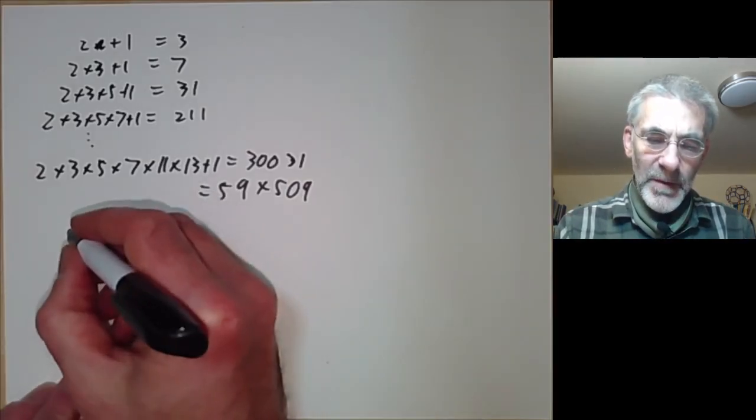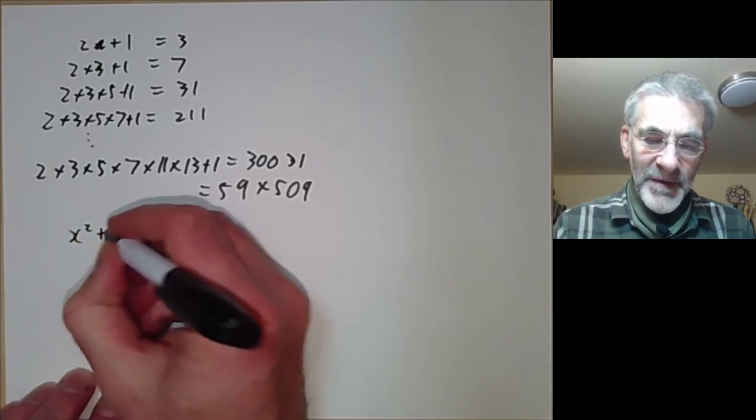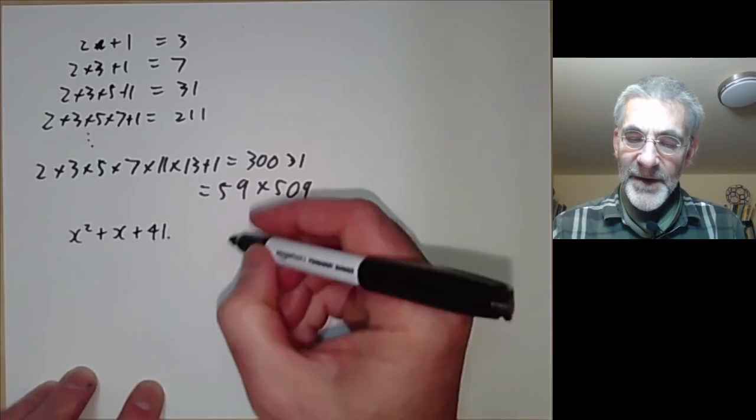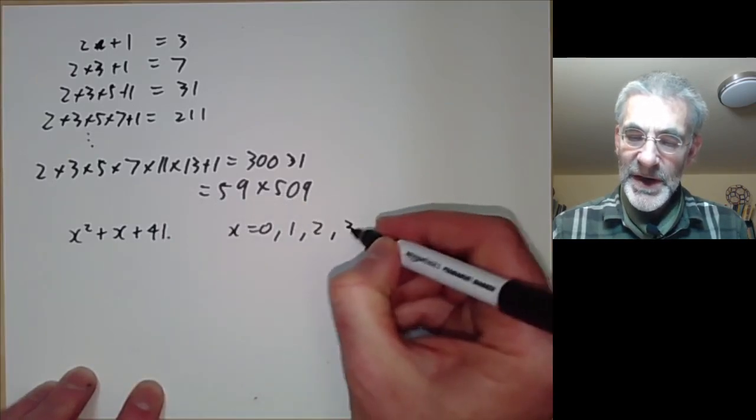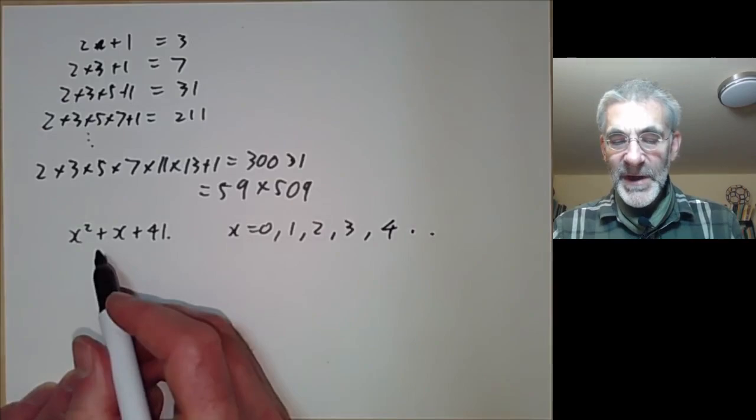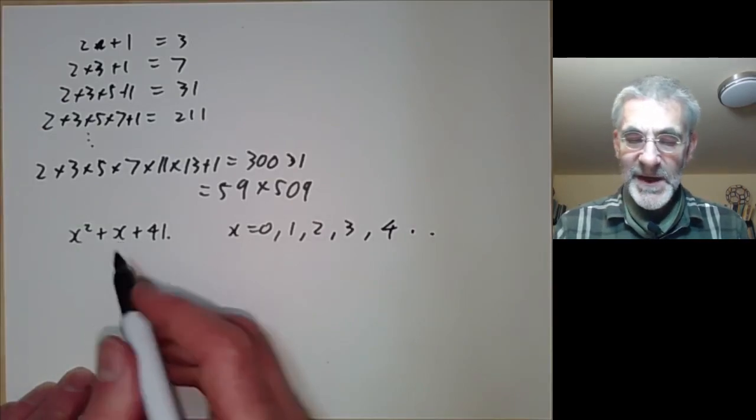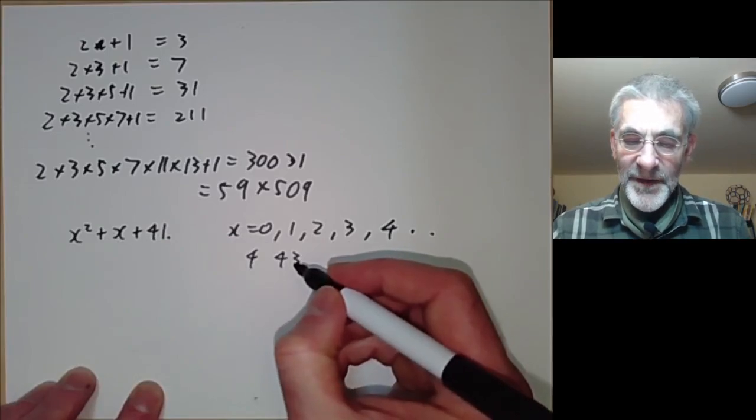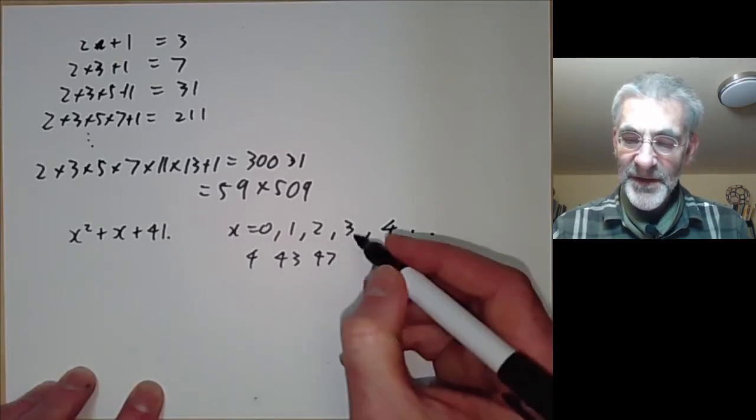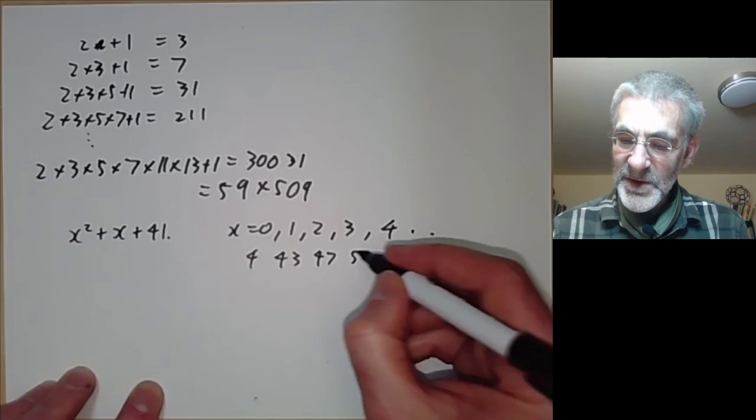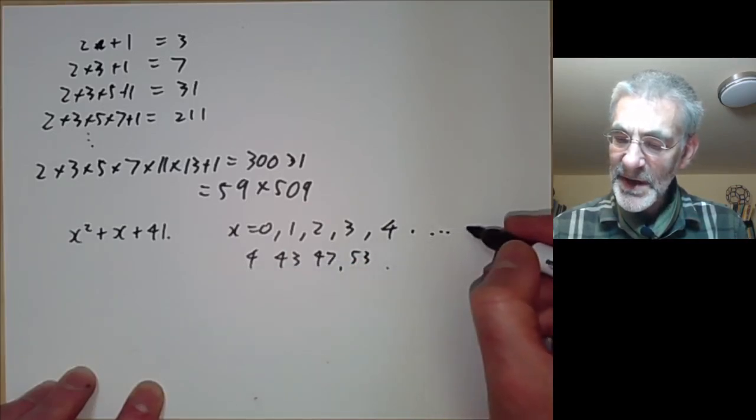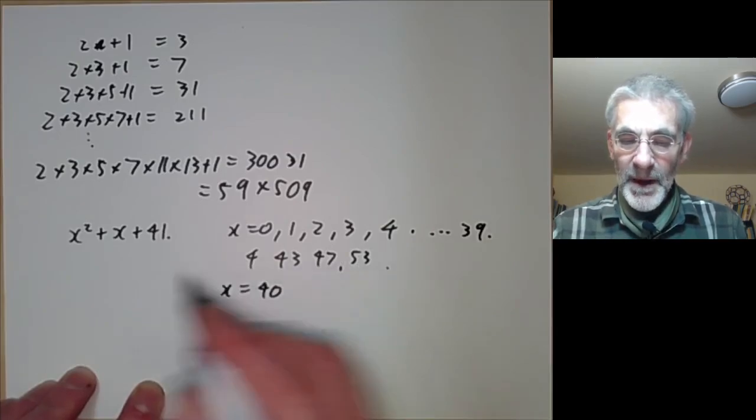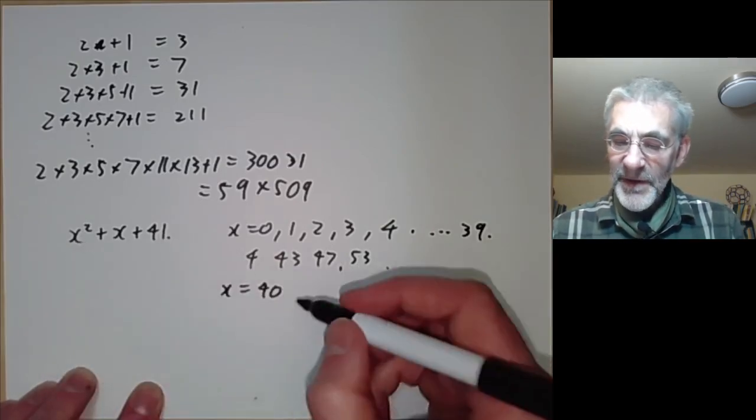For example Euler came up with the following polynomial x squared plus x plus 41 and if you take x to be 0, 1, 2, 3, 4 and so on this generates an awful lot of primes. So if x is 0 this is 41, if x is 1 it's 43, if x is 2 it's 47, and if x is 3 it's 53 and so on and it generates primes all the way up to I think it's about 39. But for x equals 40 you can see that it's divisible by 41.